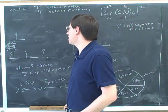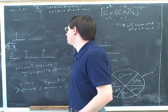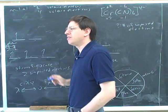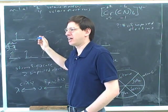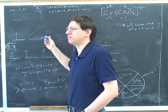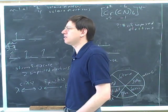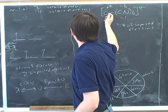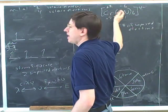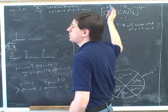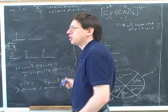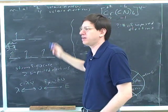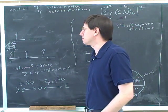Different transition metals have different distances between energy levels, so they'll absorb different photons — that's why different transition metals have different colors. In fact, even the same type of transition metal can have a different energy level spacing depending on the ligands it's connected to or depending on what its charge is. So the same transition metal might have different colors depending on what complex it's in.